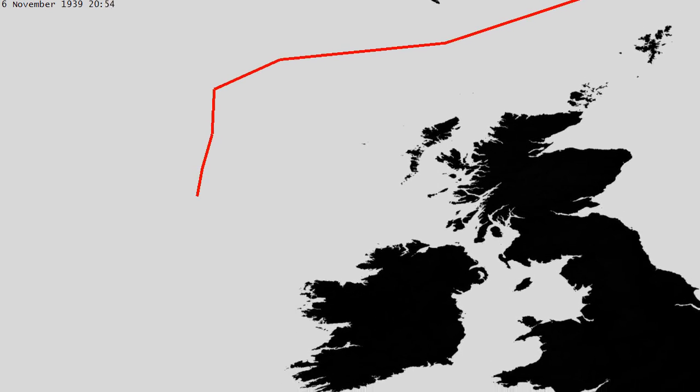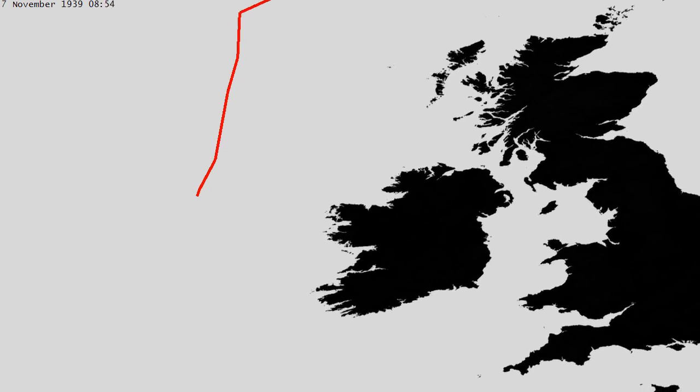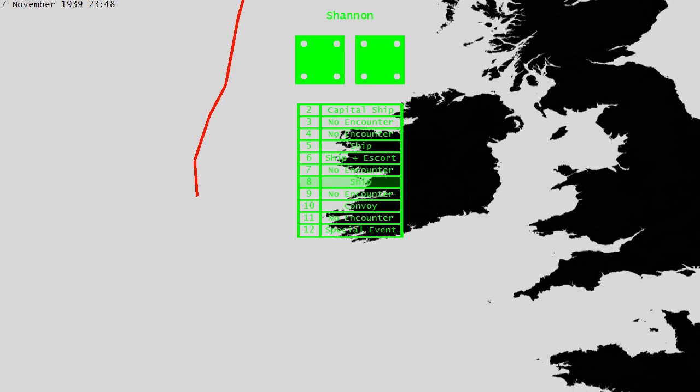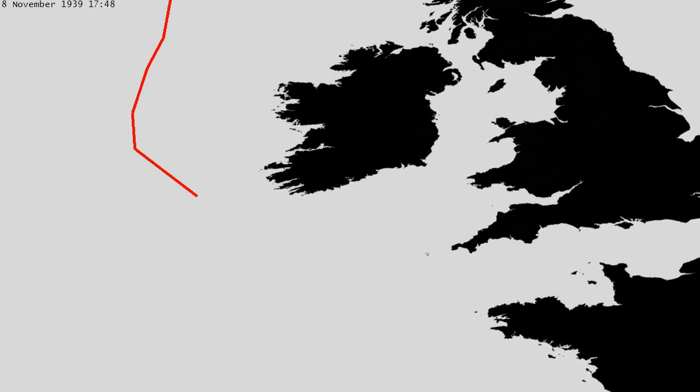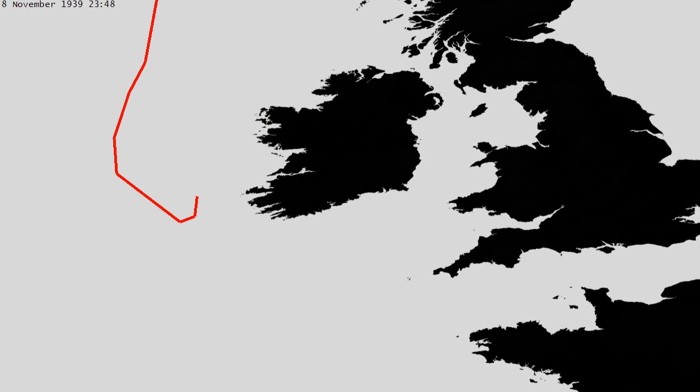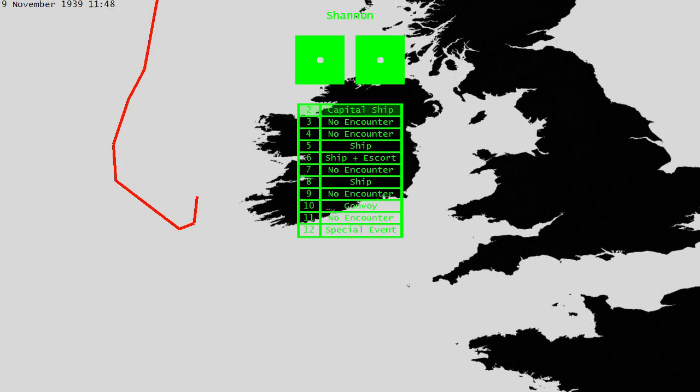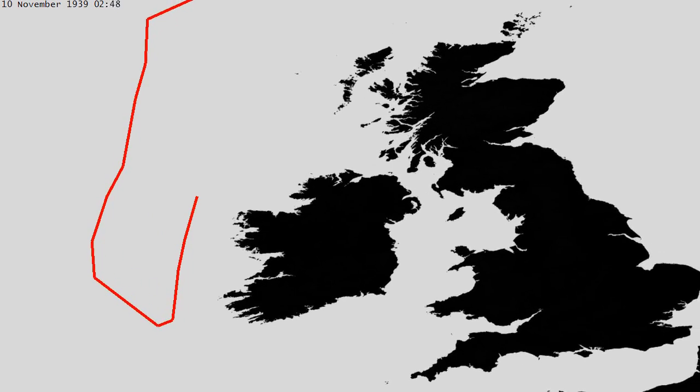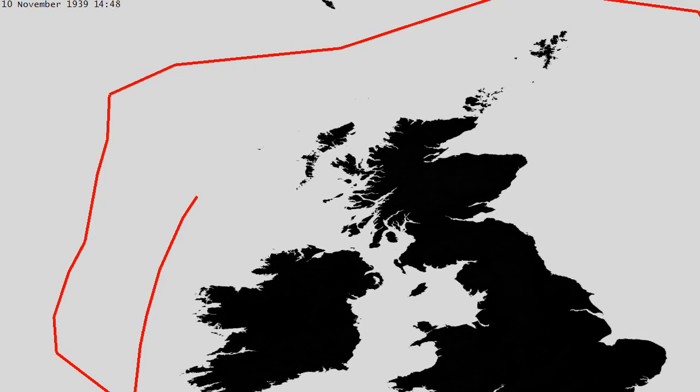Some of my more eagle-eyed viewers might have noticed a few odd things about the Santa Rita. First, she was an American ship, and attacking US shipping at this stage in the war was a major no-no for U-boat commanders. Hitler realized that the US could have a significant impact on the war in Europe if it chose to enter, so anything that might provoke the US into action was strictly verboten. Also, perhaps more surprisingly, the Santa Rita is an anachronism. She won't be launched for another year and a half yet.